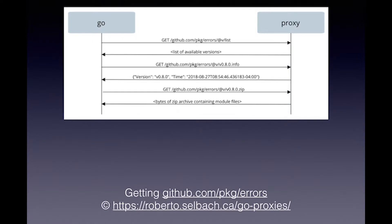Here's a sample. If you use the 'errors' package, which is a well-known package for handling and annotating errors, that's the way go get under the hood would do these calls — first it gets the list, then probably takes the latest one, 0.8, gets some information about it, and then downloads the actual zip file. It's a very simple protocol, which is usually a good thing.